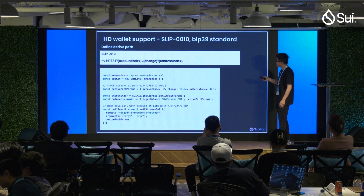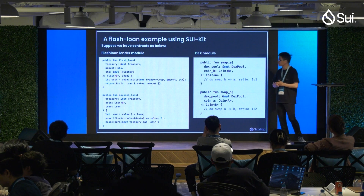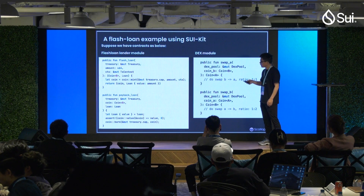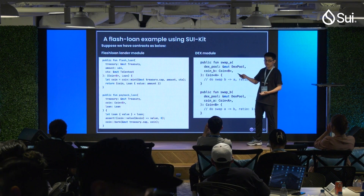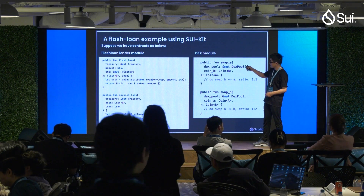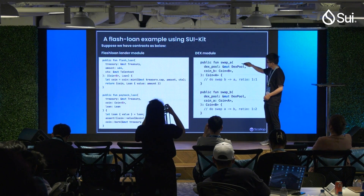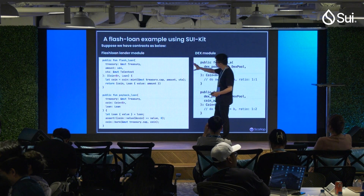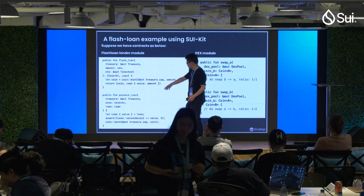After all these feature introductions, I thought it would be a great idea to give you a feeling of what SuiKit can do. Here I'll show you a practical example — it's a classical problem in DeFi using flash loans. A flash loan is a loan that needs to be repaid within a single transaction. Here is the background for this problem: suppose we have two modules — the flash loan lender module, which has two methods: flash loan and repay flash loan.